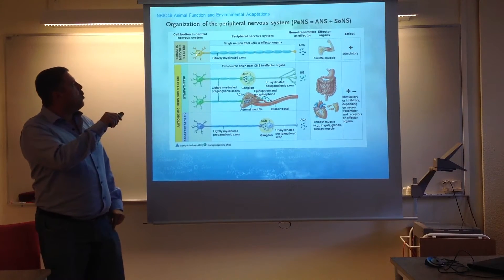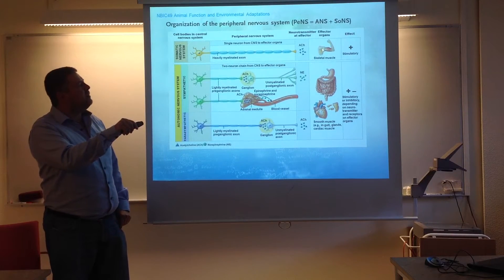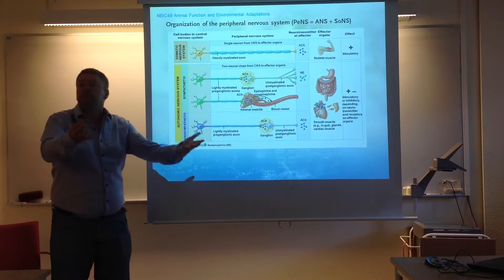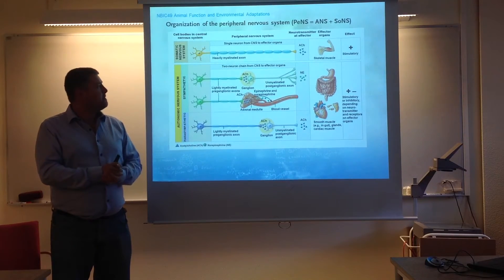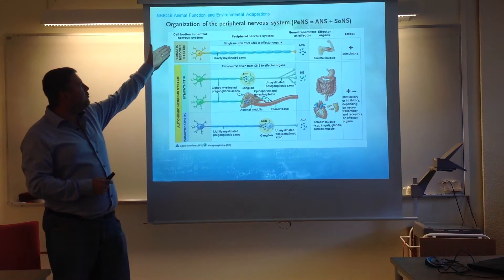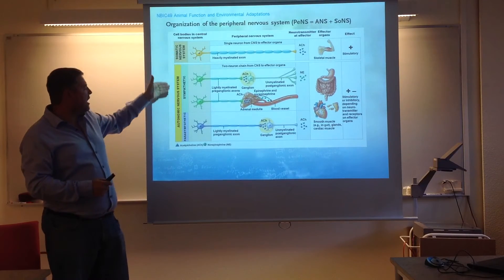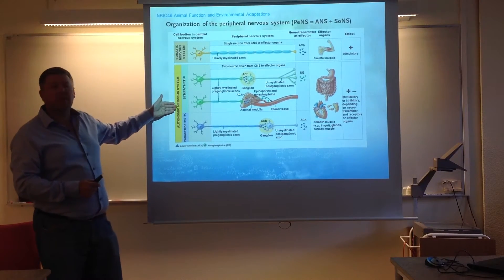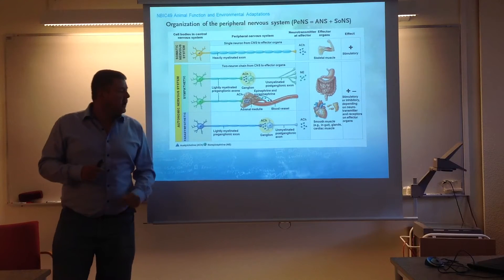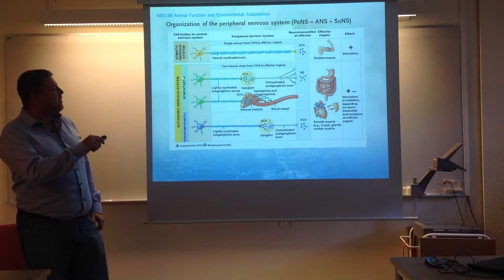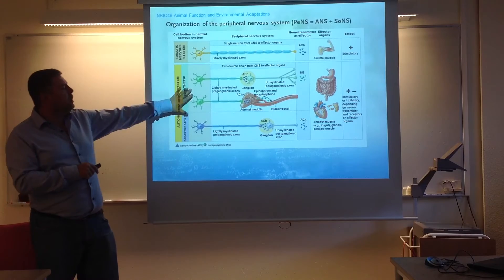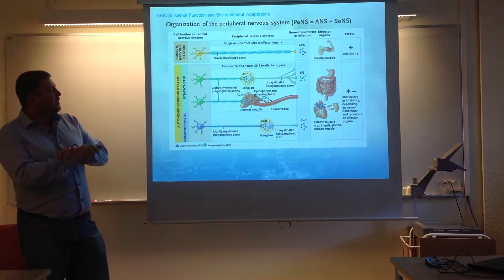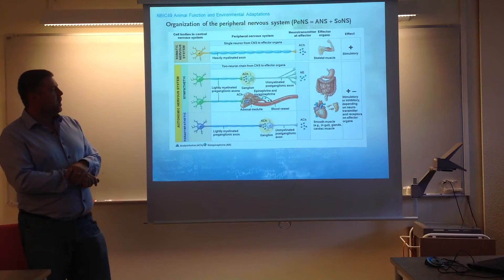Motor neurons, when activated, basically target different muscles to start contracting. The counterpart of the somatic nervous system is the autonomic nervous system, which is divided into the sympathetic and the parasympathetic parts. That's what we will be focusing on — let's take the first part up here and compare it to the part down here.